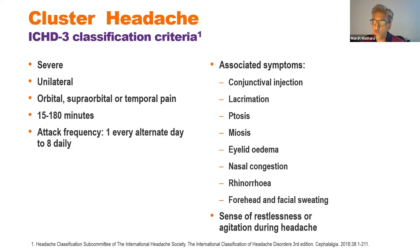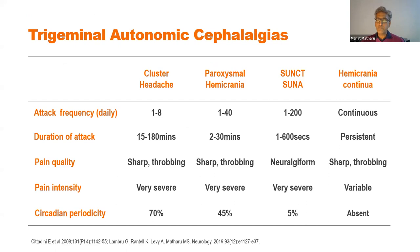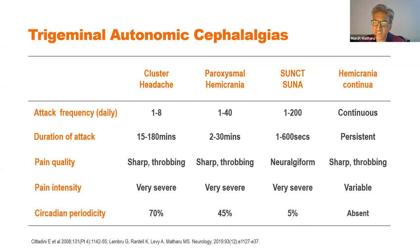The signature feature is at least one cranial autonomic feature: the eye going red, watering, swelling, drooping; pupil becoming small (miosis); nose becoming blocked or runny; facial redness or sweating. If none of these is present, a sense of restlessness or agitation will suffice. Beyond attack frequency and duration, the pain tends to be very severe with a sharp and throbbing quality.